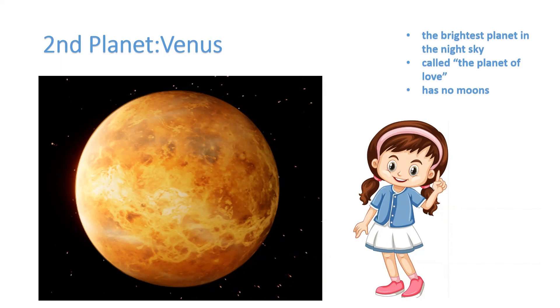It is also the brightest planet in the night sky. Venus is also called the planet of love. Venus has no moons. I think you have seen Venus at night, before the stars come. Isn't it, my friends?